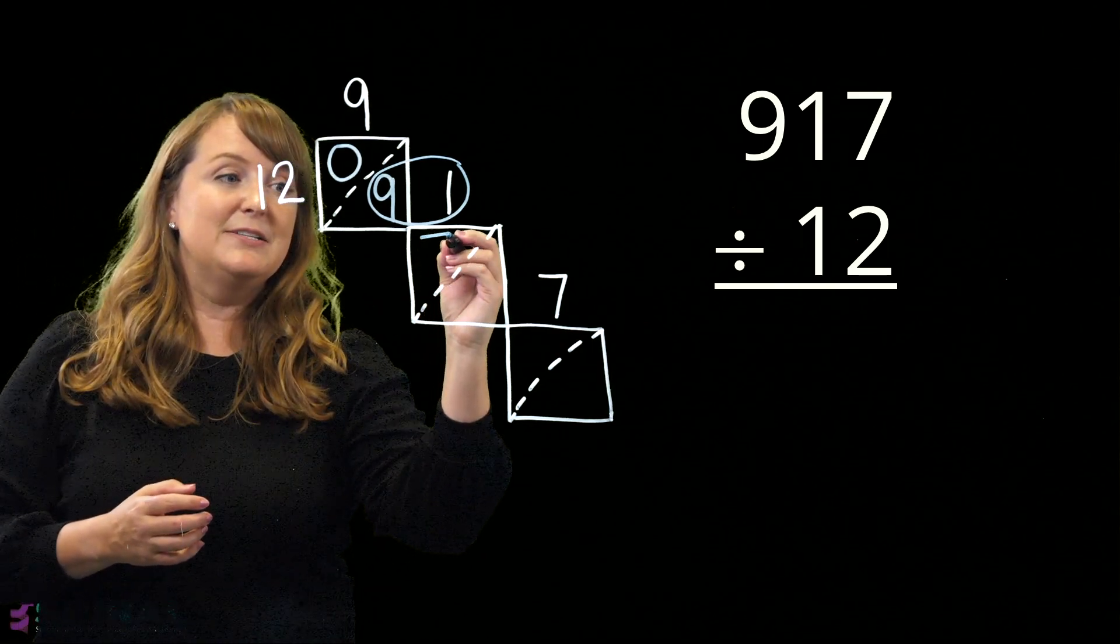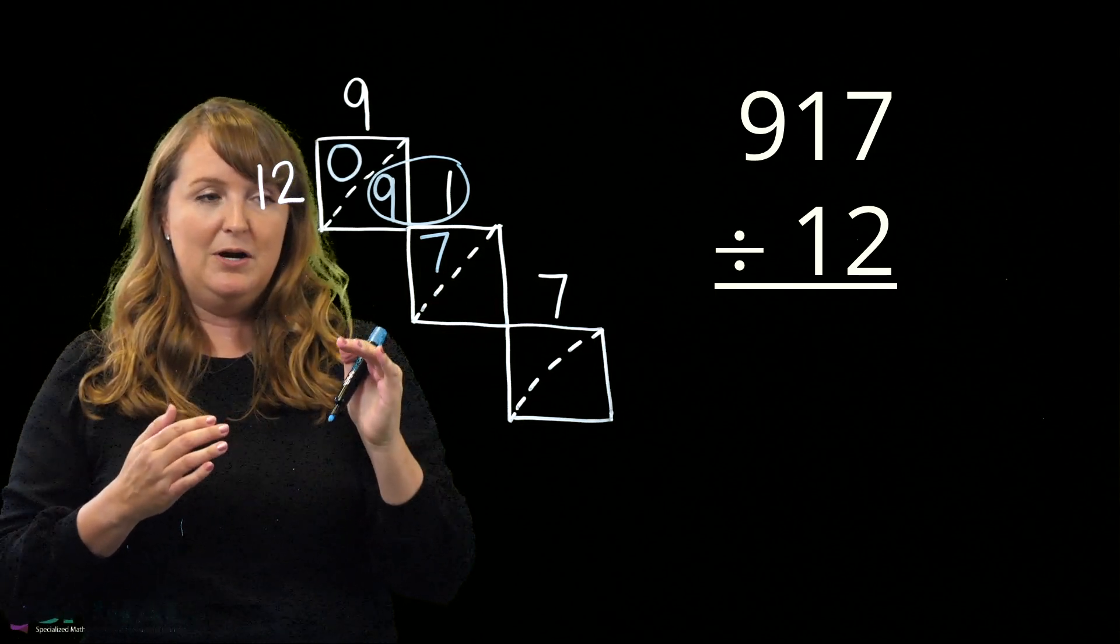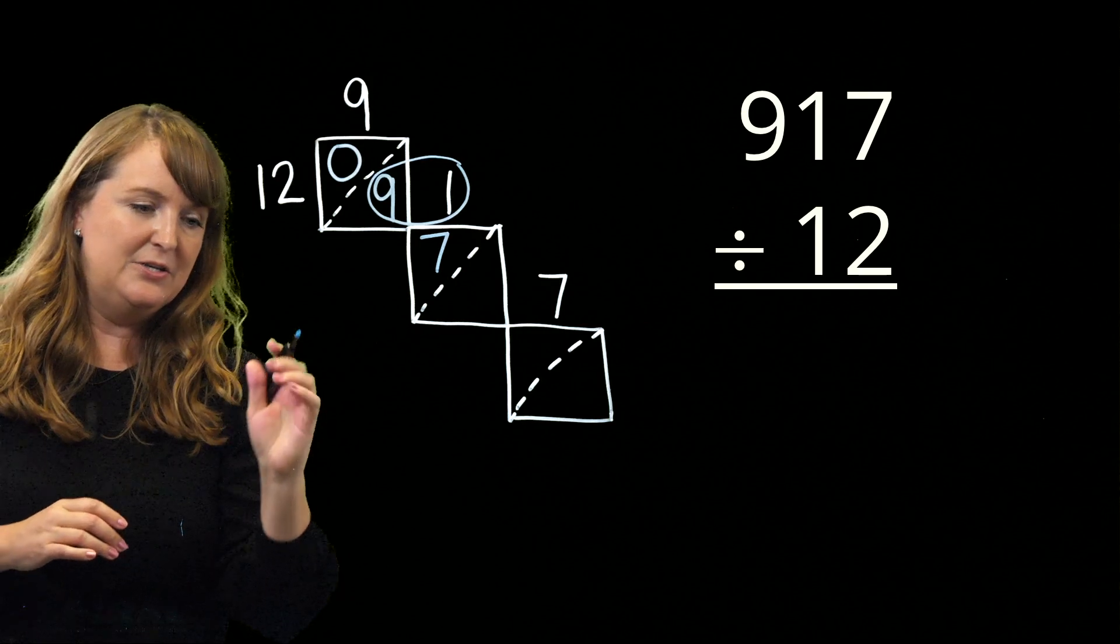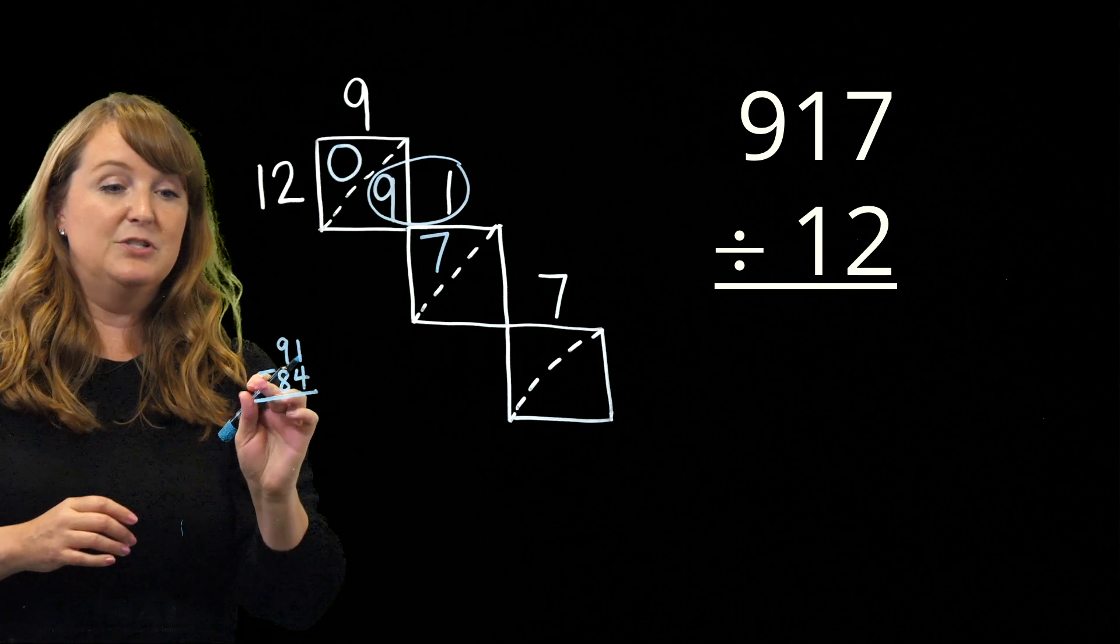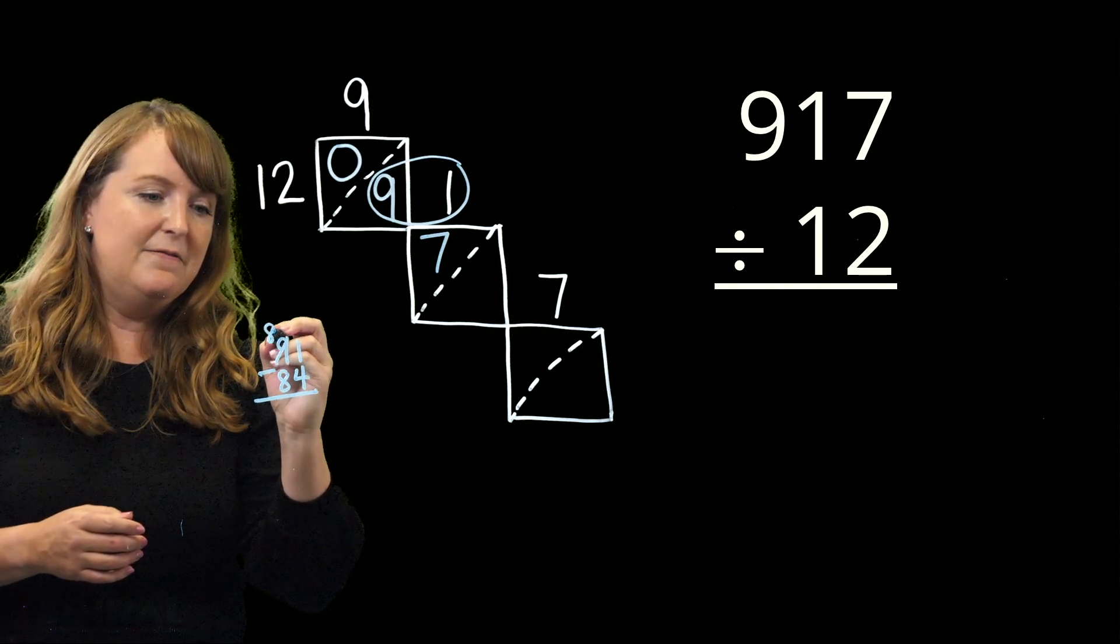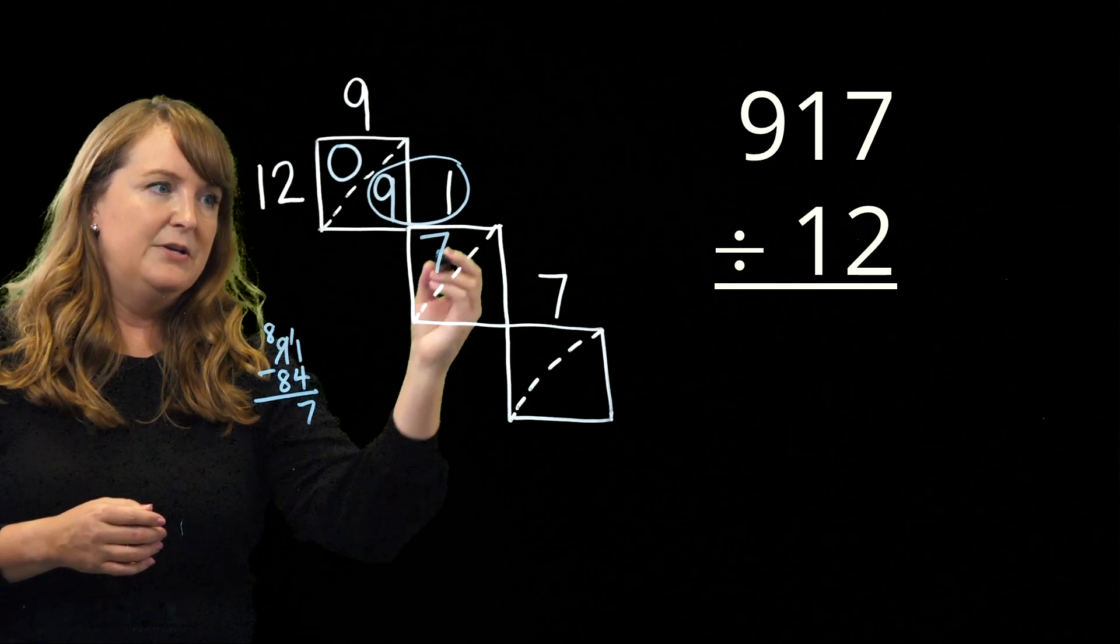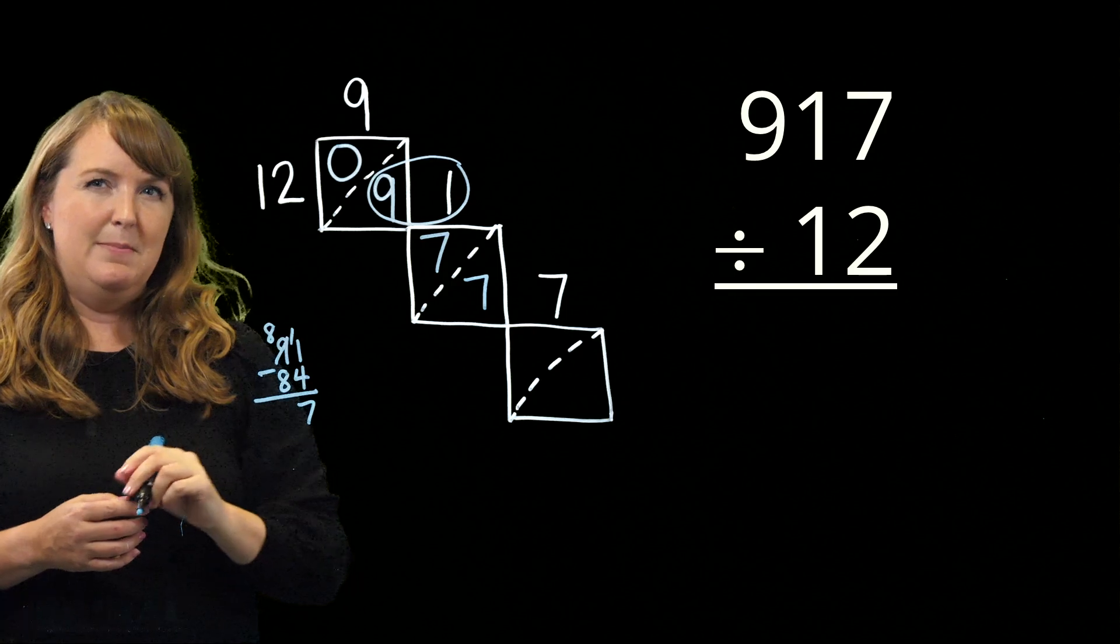So I think I can make 7 full groups of 12. Remember, that was 84. And if I want to make some notes right here, I could do that. So how many are remaining after I make those 7 full groups of 12? Well, 91 minus 84 is 7. So I have 7 full groups of 12 with 7 remaining.